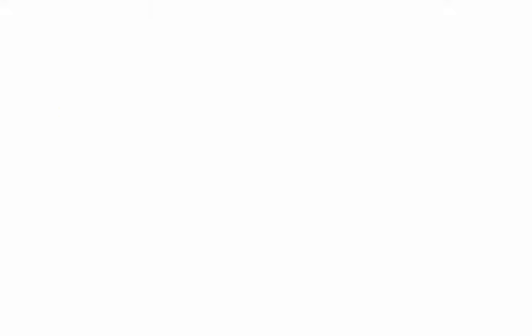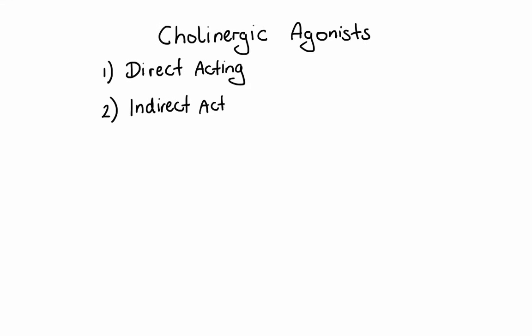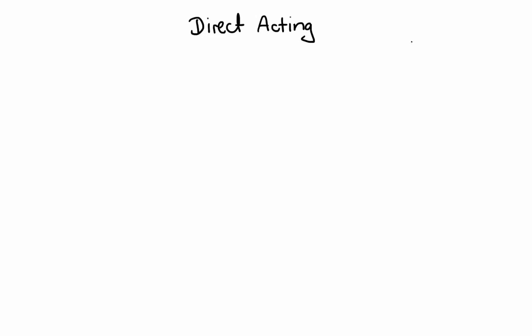Now let's talk about the actual drugs. We can divide cholinergic agonists into three different groups: direct acting, indirect acting reversible, and indirect acting irreversible. Direct acting cholinergic agonists simply mimic the effects of acetylcholine by binding to either muscarinic or nicotinic receptors. The first drug in this group is acetylcholine itself. The biggest problem with acetylcholine is that it produces non-specific cholinergic effects and is rapidly inactivated by cholinesterases, so its clinical use is very limited.